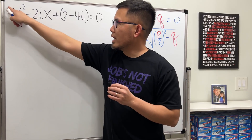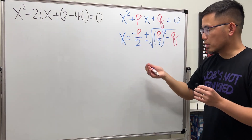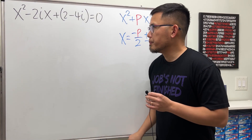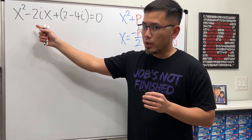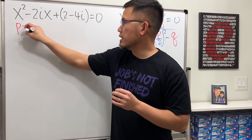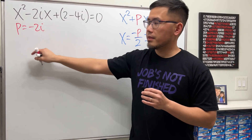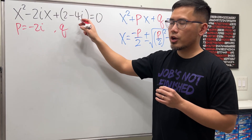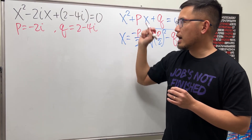In this situation, notice that we have a leading coefficient of 1, so the PQ formula works wonders. The p here is negative 2i — that's the coefficient of x — and the q is just the constant term, which is 2 minus 4i.